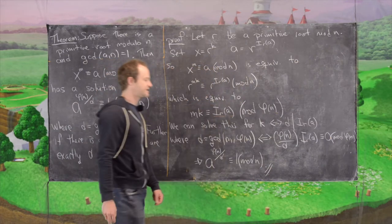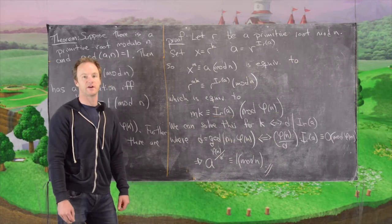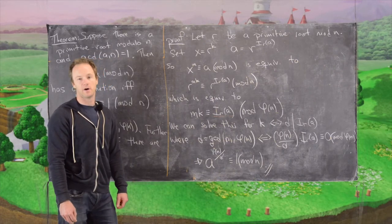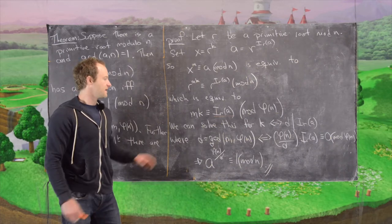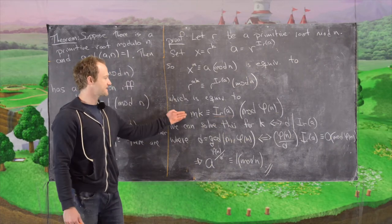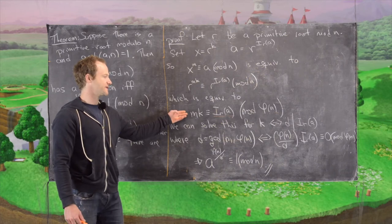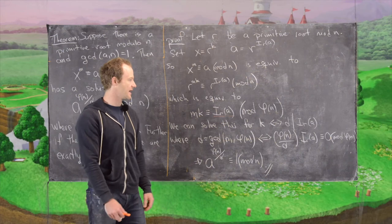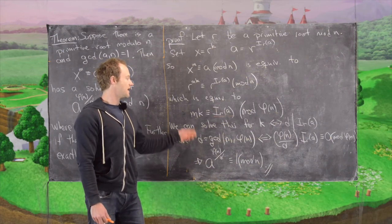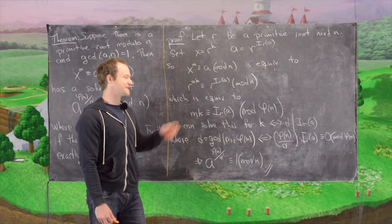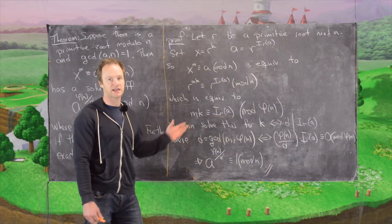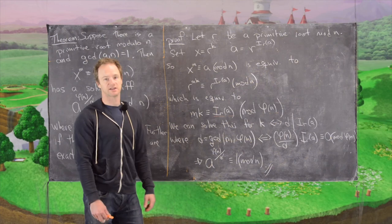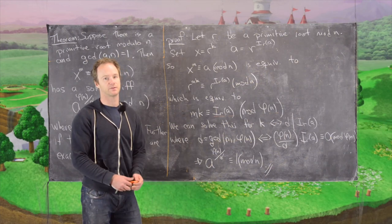That finishes the proof of the condition for when there is a solution. Now for how many solutions there are: this linear congruence has a solution exactly when d divides i_r(a), and in that case, has exactly d solutions. This is by a previous result for linear congruences, finishing the entire argument.